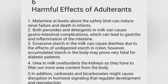The harmful effects of adulterants are as follows. First, melamine at levels above the safety limit can induce renal failure and death in infants. Second, both peroxides and detergents in milk can cause gastrointestinal complications leading to gastritis and inflammation of the intestine. Third, excessive starch in milk can cause diarrhea due to the effects of undigested starch.